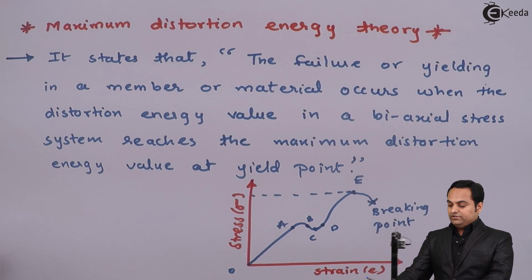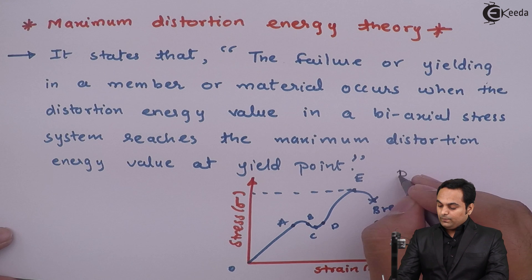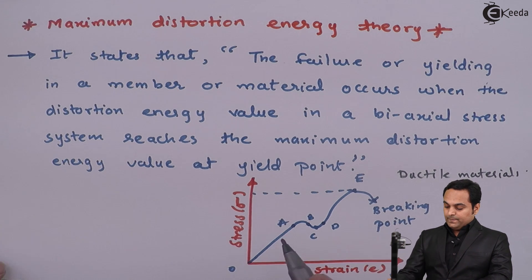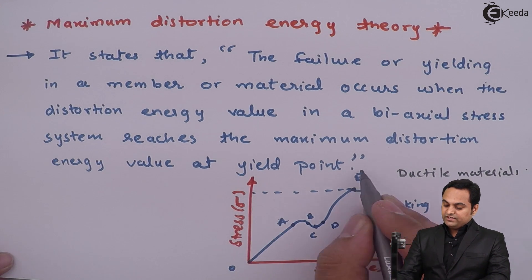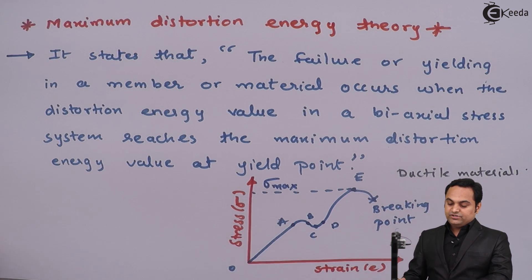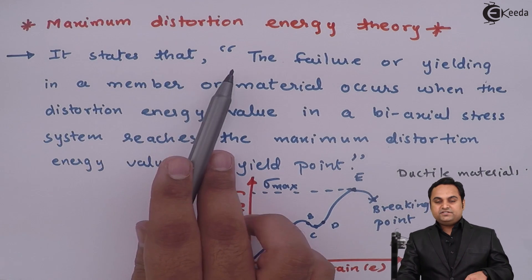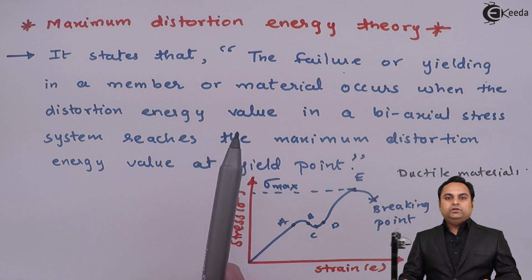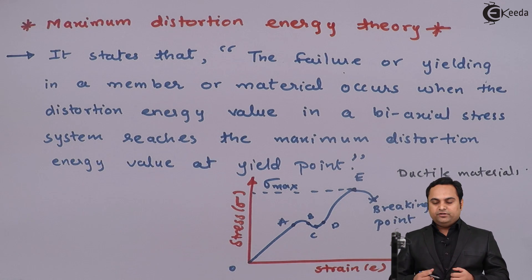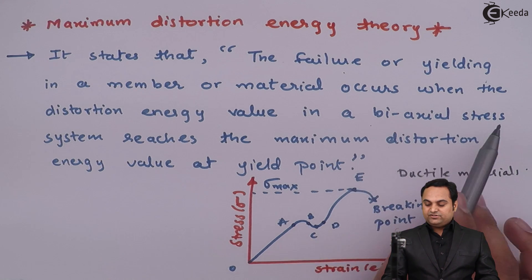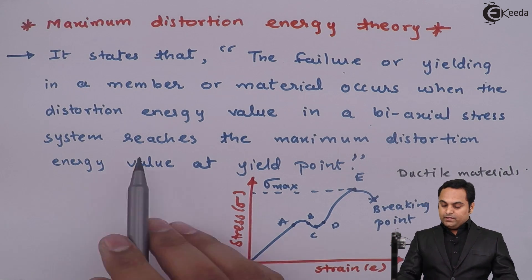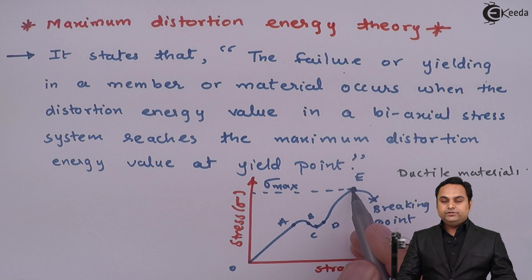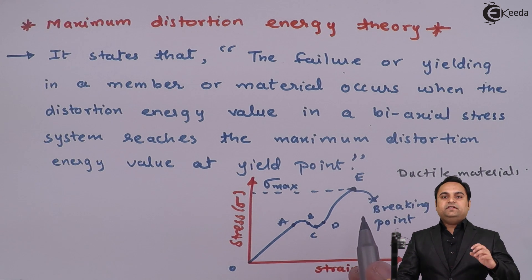Here I have drawn the stress-strain graph for ductile materials. In this graph, on the stress axis, we have the maximum stress at point E. The statement says failure or yielding occurs when the distortion energy — the energy stored in the material in a biaxial stress system — reaches the maximum distortion energy value, which occurs at the yield point.